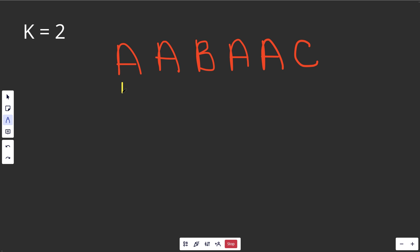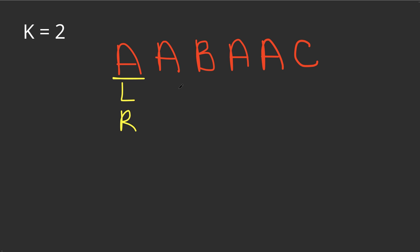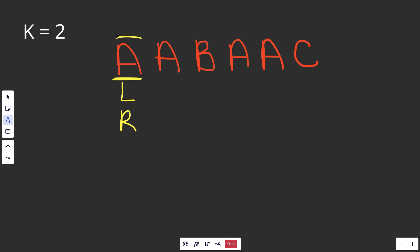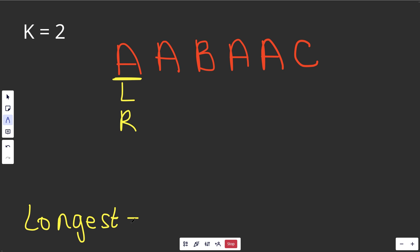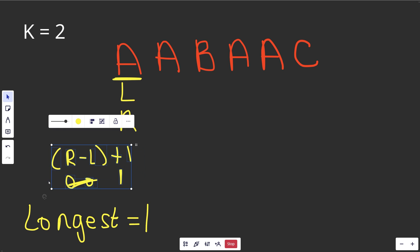To start a sliding window algorithm, we have L and R both initialized at the beginning. Currently our window is just the single character A. Is this valid? By valid, we mean: if we change at most k things, is our entire window the same character? Of course it is — we just have one character. So we mark down that the longest we've seen so far is equal to 1. We always get the length of our current window by R minus L plus 1. Here both are zero, so we get one.